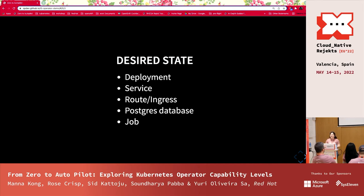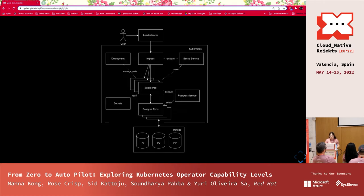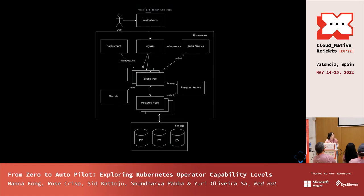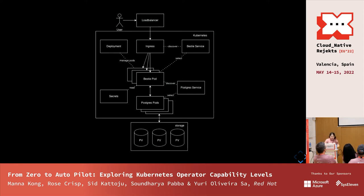For the Postgres database we used the Crunchy Postgres operator, which came with a lot out of the box and did most of the heavy lifting. For the job, we needed it to seed our database before our application ran. This diagram shows all the things our application needed — deployment, ingress, services, secrets, and more.